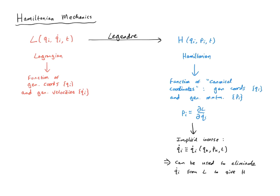Why should we bother with this? The Hamiltonian is written in terms of the canonical variables — positions and momenta — which define phase space, and these obey the Poisson bracket relations. Hamiltonian mechanics treats the generalized positions and momenta on an equal footing. For n generalized coordinates, it yields 2n first-order differential equations requiring 2n initial conditions, compared to Lagrangian mechanics which gives n second-order equations. Furthermore, conserved quantities reduce the complexity in the Hamiltonian formulation, unlike in the Lagrangian formulation.